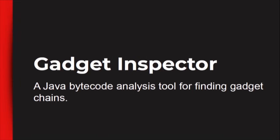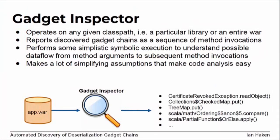So I put together a tool called Gadget Inspector, which is a Java bytecode analysis tool for finding gadget chains. It operates on a class path — you specify either some JARs and their dependencies or an entire WAR, basically your entire application. It reports discovered gadget chains, which are sequences of method invocations where one invokes the next, starting at some known entry point and getting to some kind of dangerous behavior. It does simplistic symbolic execution to figure out when attacker-controlled arguments can get passed into a method and then passed to the next one in the chain.